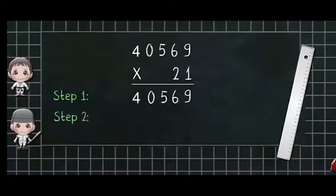Multiply 40,569 by the digit in the 10th place of the multiplier. As the digit 2 is in the 10th place we are actually multiplying by 20. So we write 0 below the digit 9 of the first product.